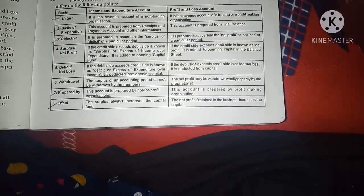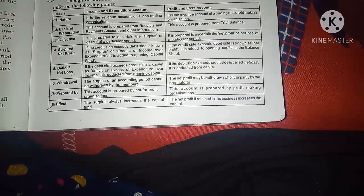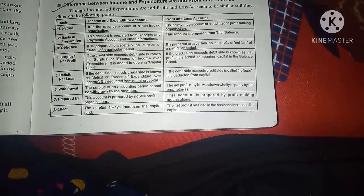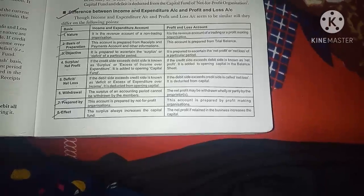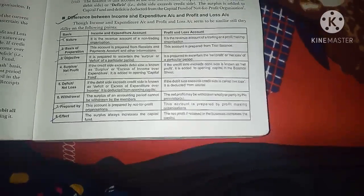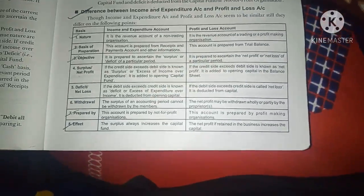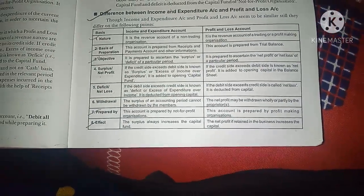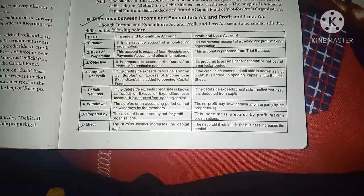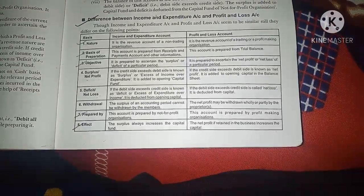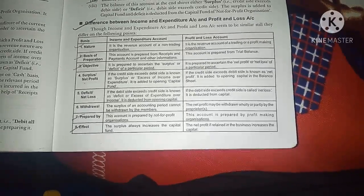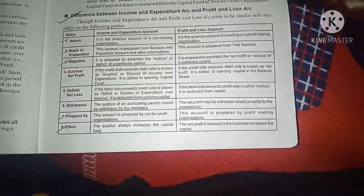We make a profit and loss account for profit-making organizations, but for NOP organizations we do social work, so we make an income and expenditure account instead. The most important difference: the income and expenditure account is for non-profit organizations (NOP), while the profit and loss account is for profit-earning organizations.